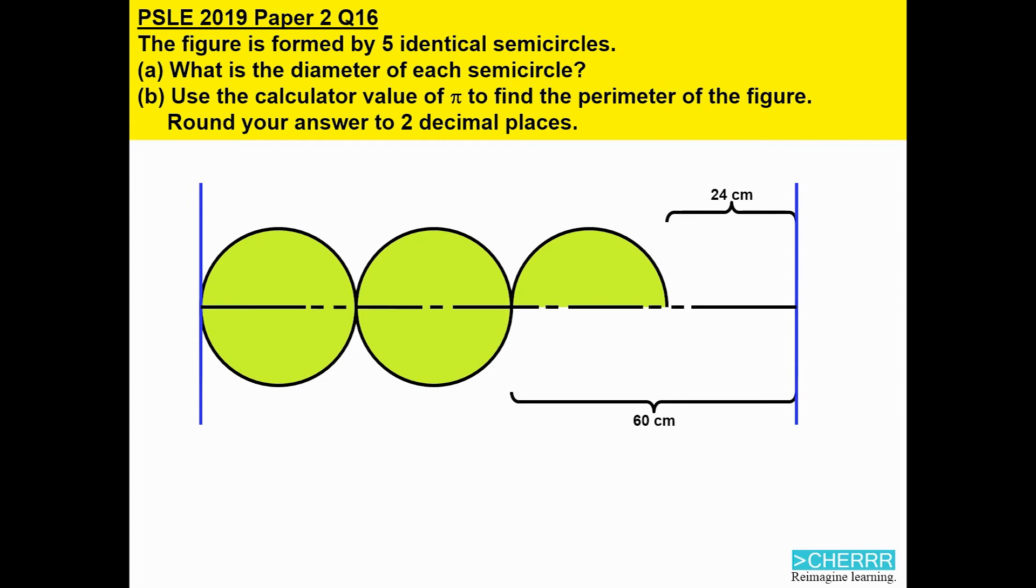If you do a comparison between the top half and the bottom half, you will find that we are able to solve for the diameter of one circle, which is actually 60 centimeters minus 24 cm. That will get us 36 cm.